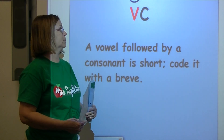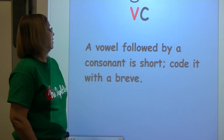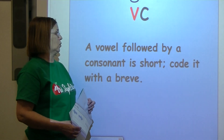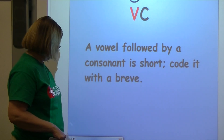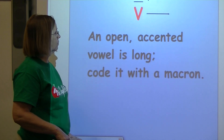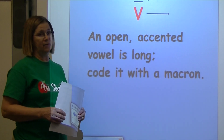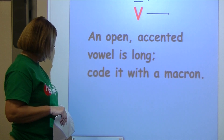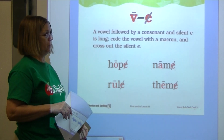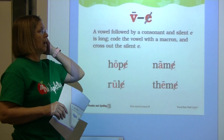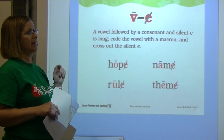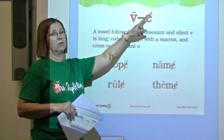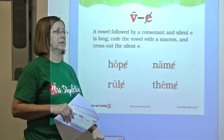Let's go over our rules. A vowel followed by a consonant is short — code it with a breve. An open accented vowel is long — code it with a macron. A vowel followed by a consonant and sneaky e is long — code the vowel with a macron and mark out sneaky e.